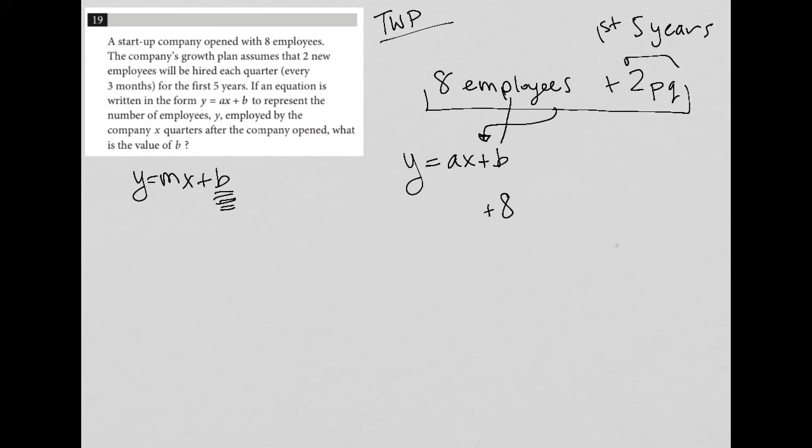Because that's how many employees this company starts out with before they start adding two per quarter. And because X represents the number of quarters, I know that my A value should be two. Basically, I'm replacing this PQ thing I made up, replacing it with X.